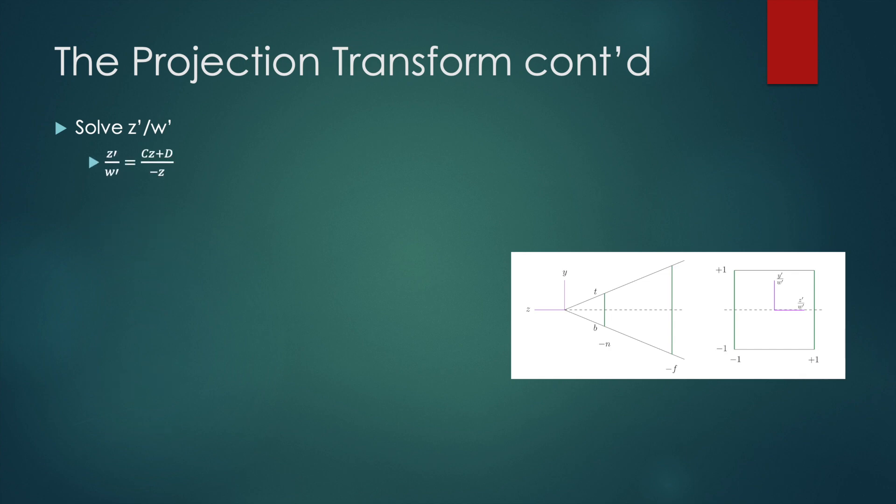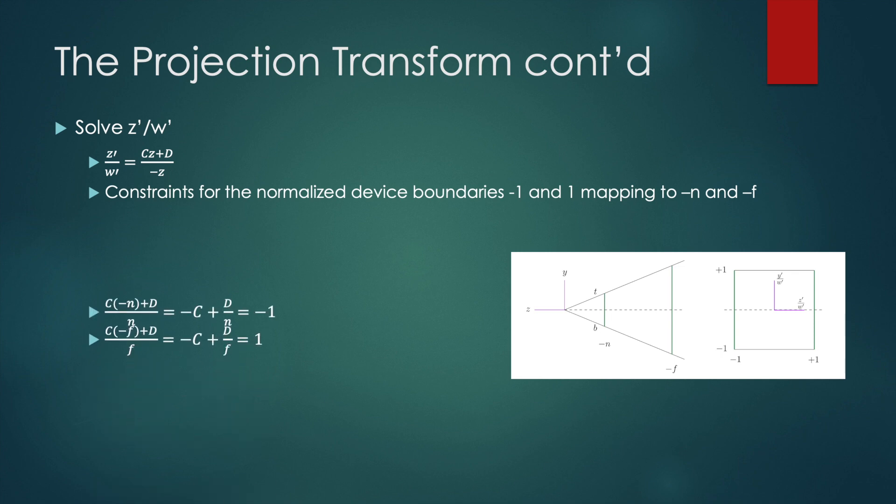And so we know our initial equation z prime over w prime is c z plus d over minus z. And when we plug in minus n for the near clipping plane and minus f for the far clipping plane we can set up two constraint equations. And we can solve this linear system for c and d and yield the following results.